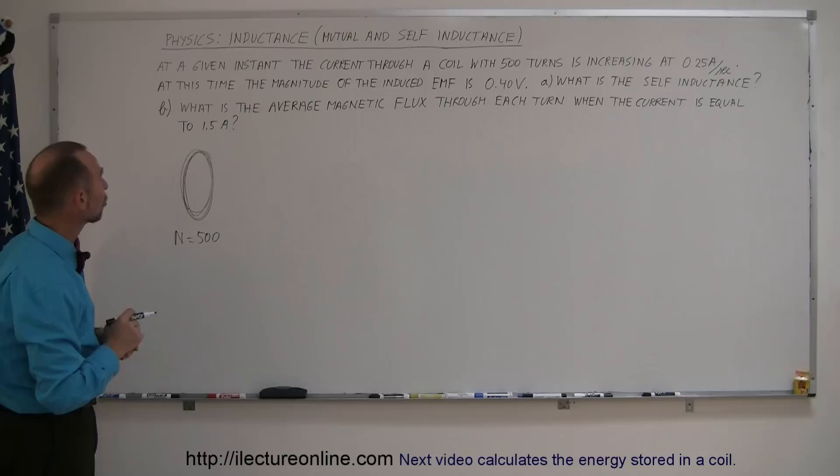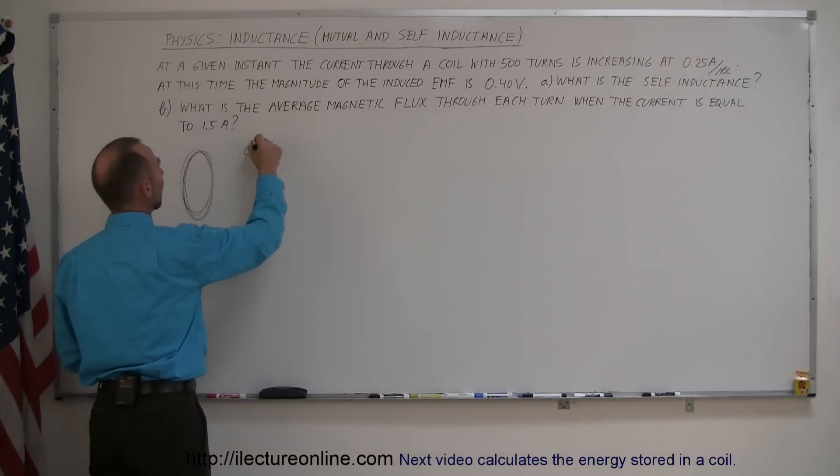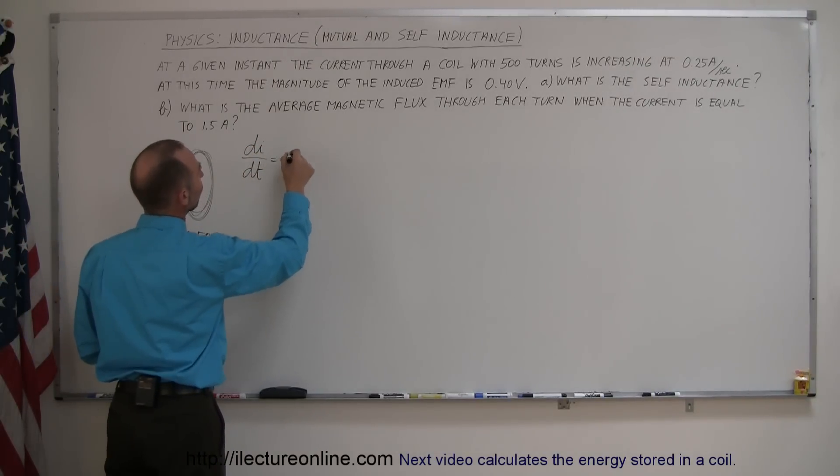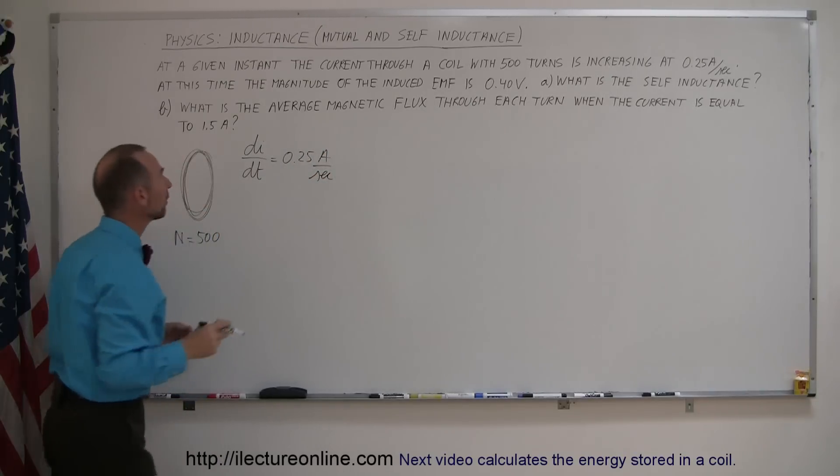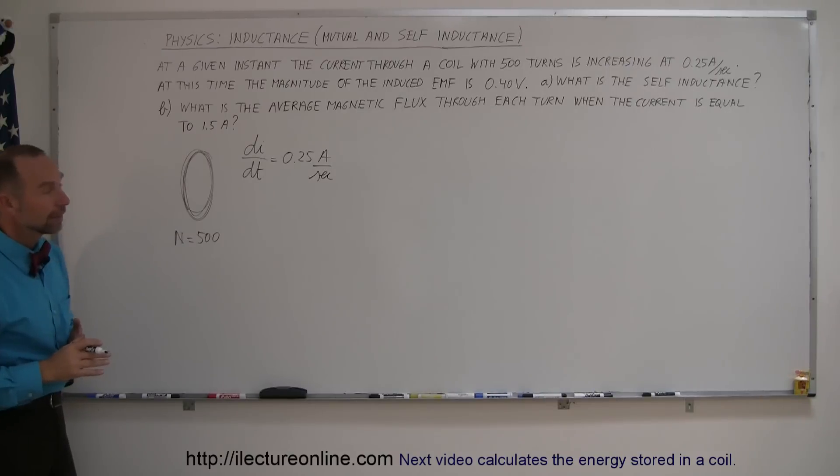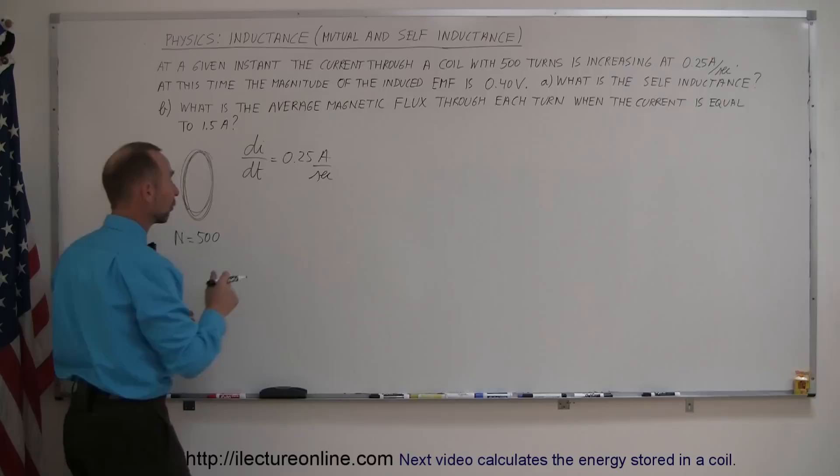So for part A, we're dealing with a changing current. So the di/dt is equal to 0.25 amps per second. And they tell us that when this is happening, the EMF is 0.4 volts.